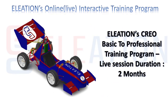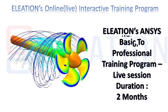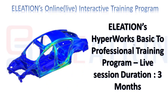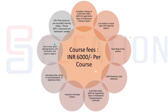The training duration for Eliation's Creo Online Live Interactive Training Program is 2 months. The Ansys program is also 2 months, and the HyperWorks program is 3 months. Course fees for Eliation's Online Live Interactive Training Program is Rs. 6,000 per course.